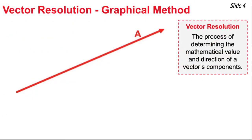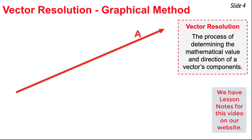The process of determining the magnitude and direction of a vector's components is known as vector resolution. Here we'll discuss the graphical method of vector resolution. It relies on the idea that vector components are projections of the vector onto the x and y axes. Here's how we get it done. First, we go to the tail of the vector and we draw a little hash mark.